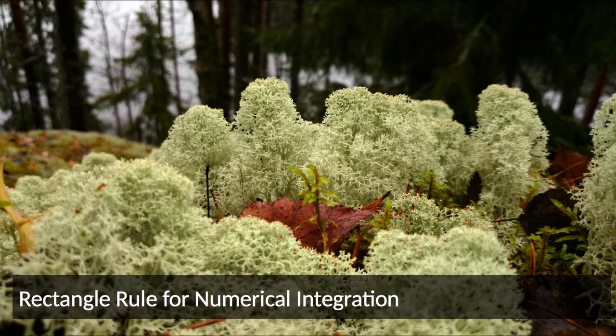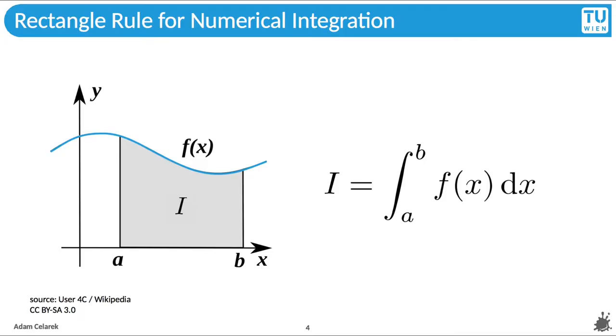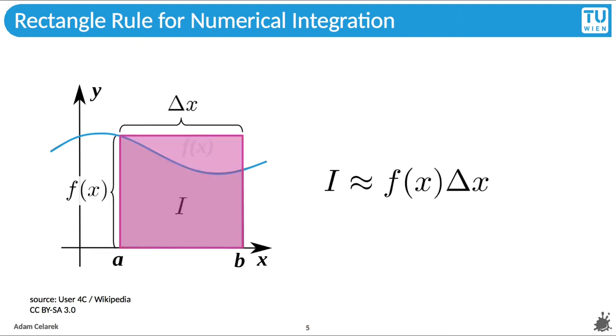Let's start with the rectangle rule. Here we see a function f that we want to integrate numerically between a and b. In other words, we want to compute the area i under the curve. A very rough approximation would be to compute the area of a rectangle with height f of a and width b minus a.